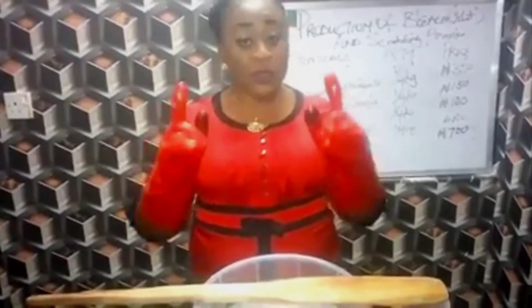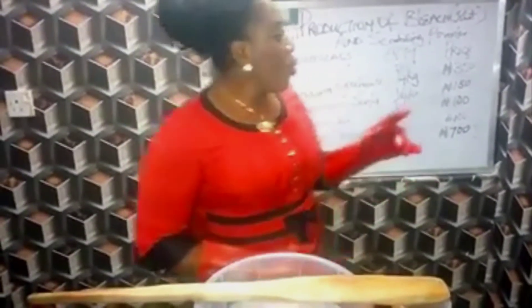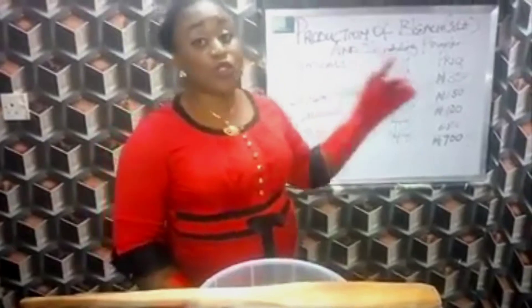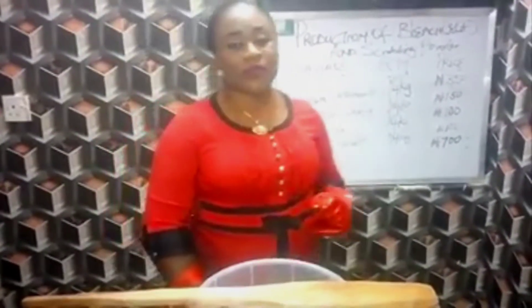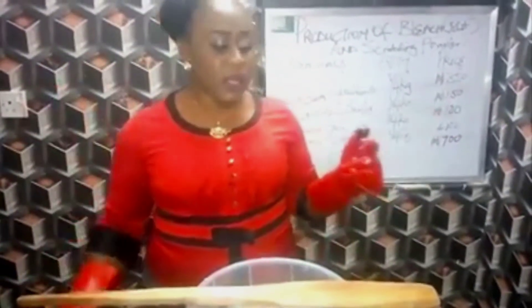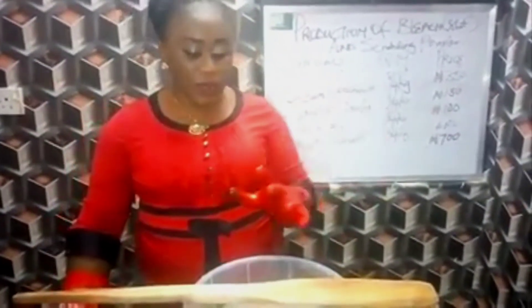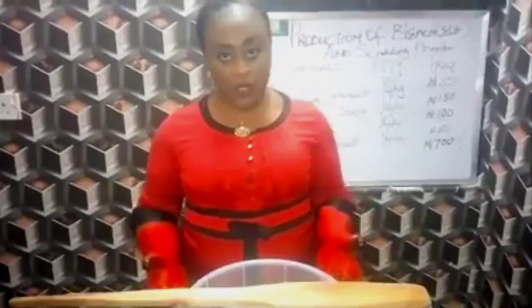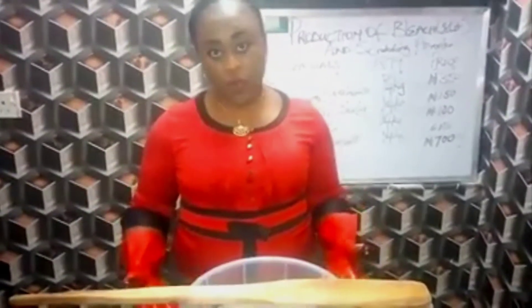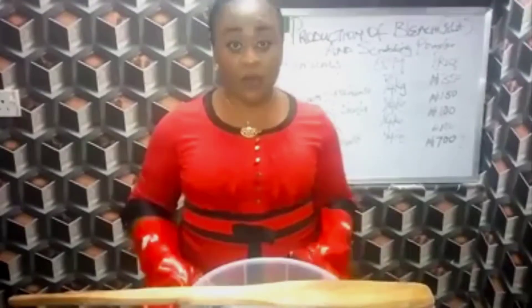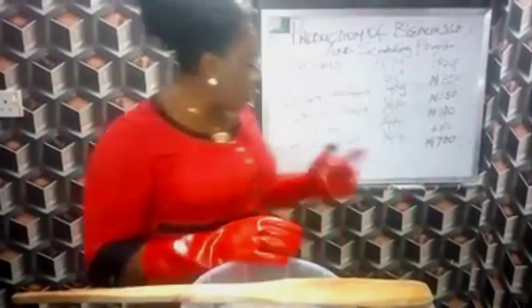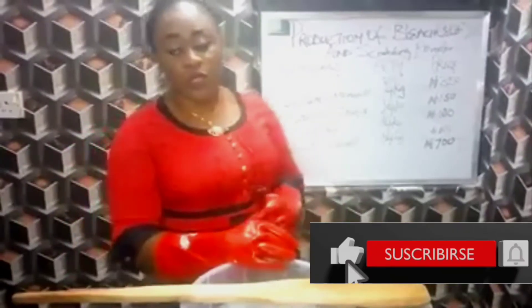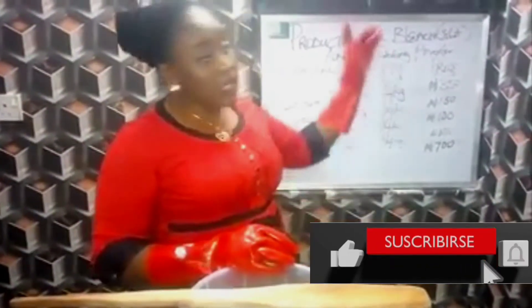we are going to be focusing on beauty and sanitary products. And today we are going to be learning how to actually produce your own bleach and scrubbing powder — like the Vim you know in the market. The basic thing we are going to be doing today is first producing our bleach, and then the residue of your bleach will form our Vim. Yes, as easy as that. I will be using just four chemicals to produce today's bleach. We are actually making eight liters of bleach.